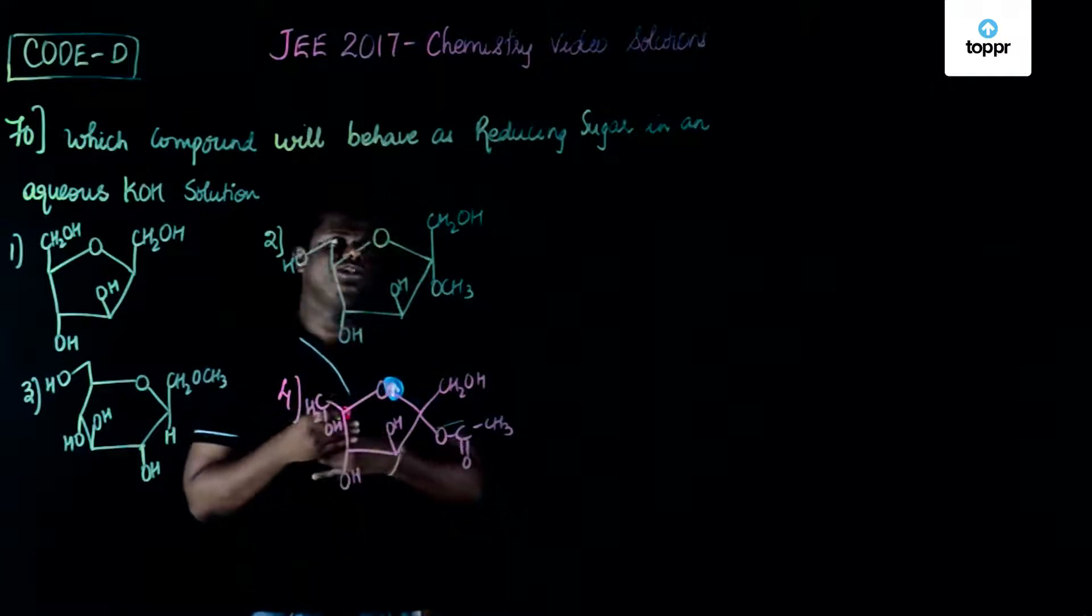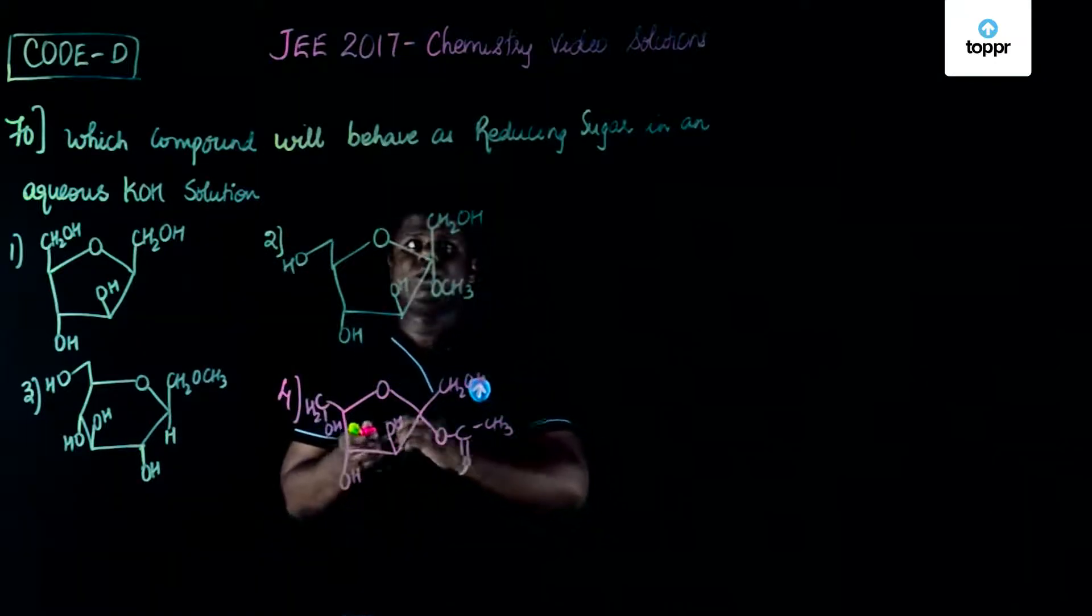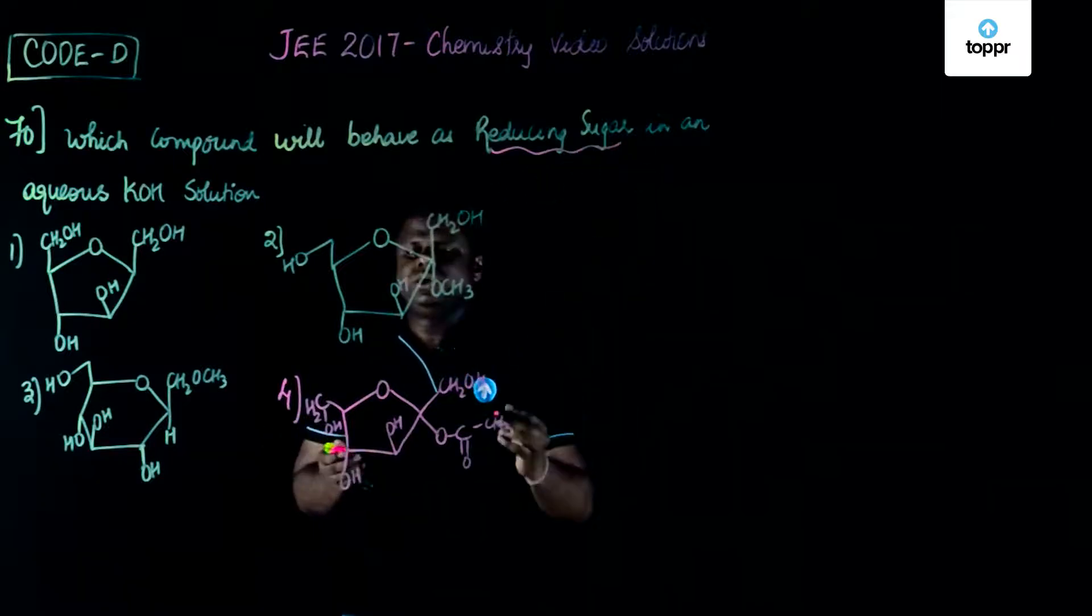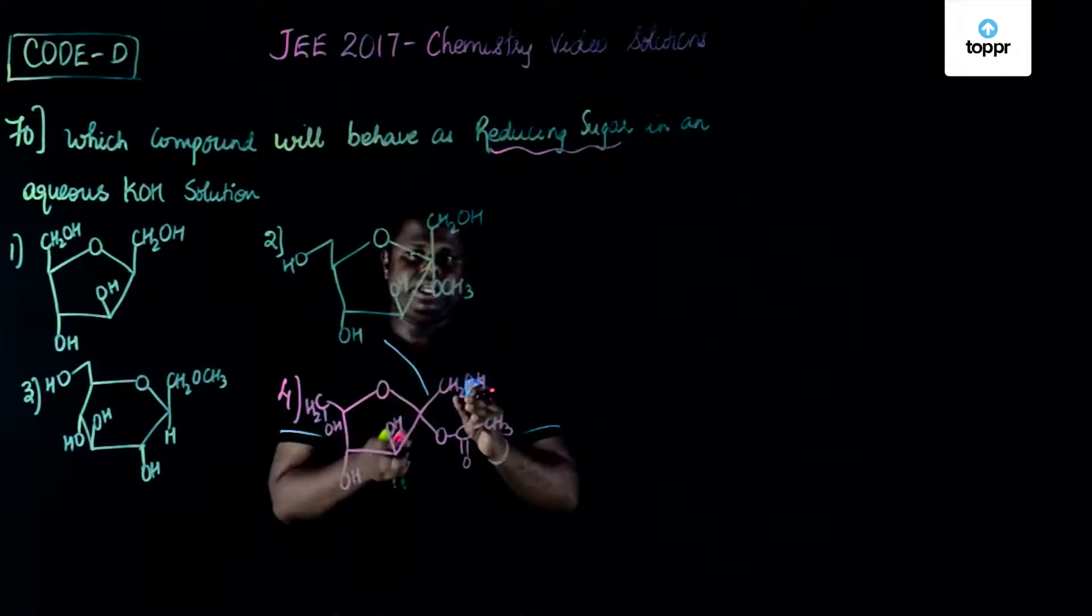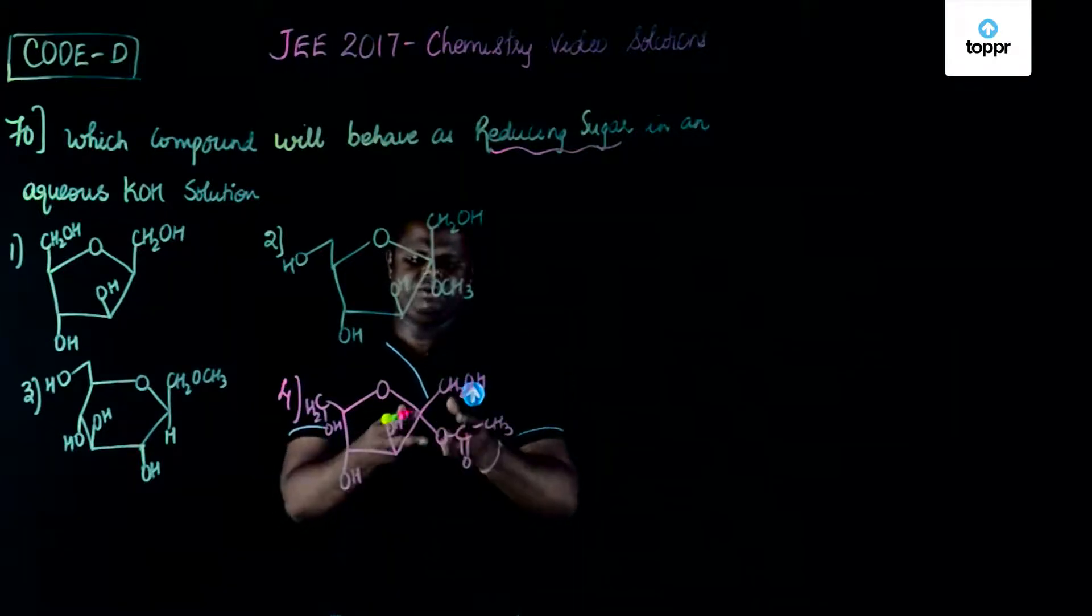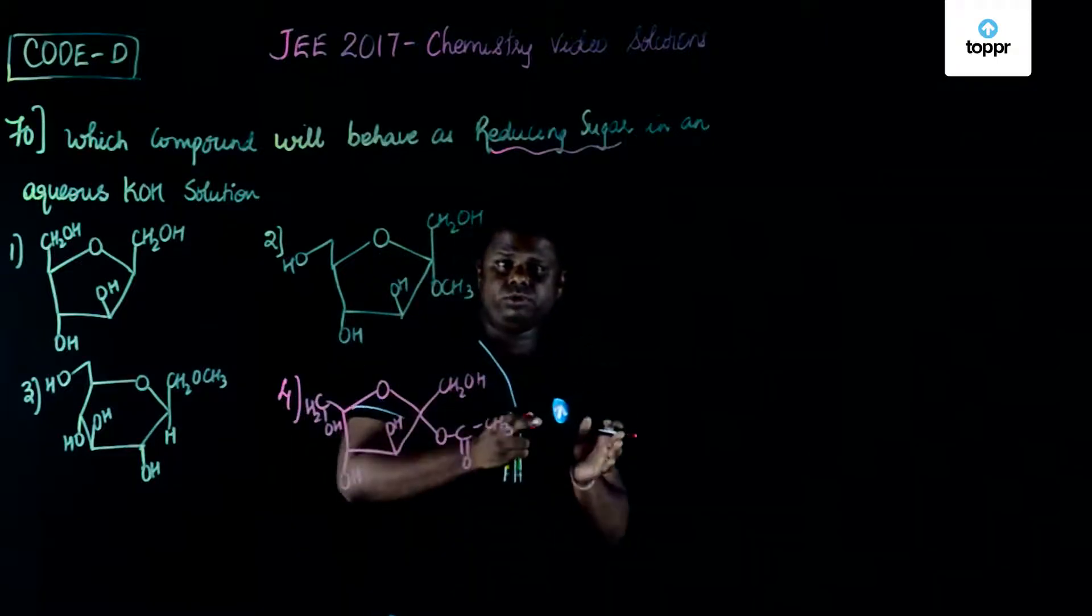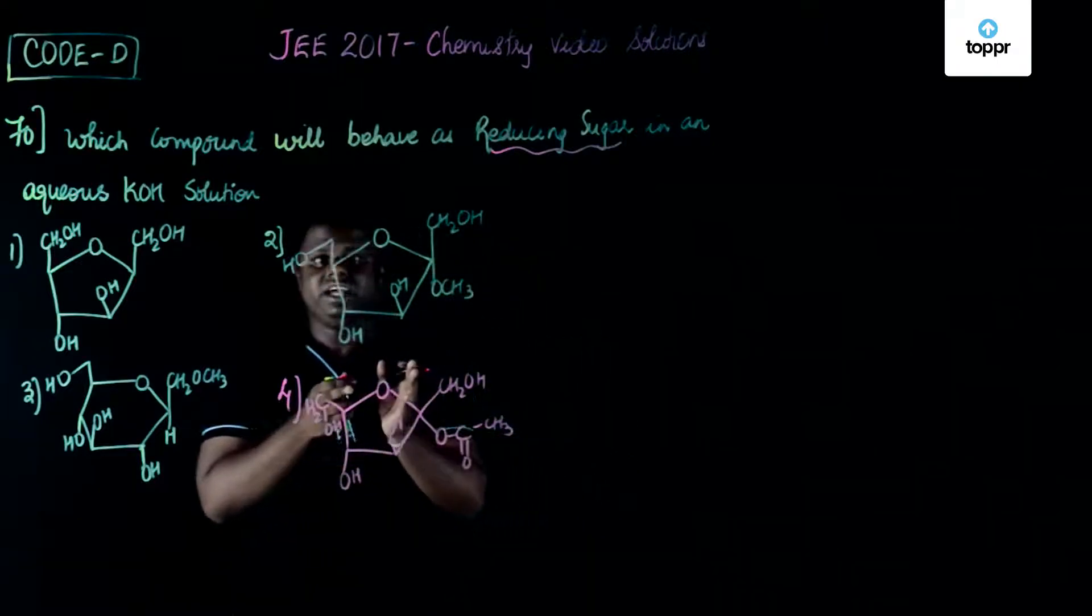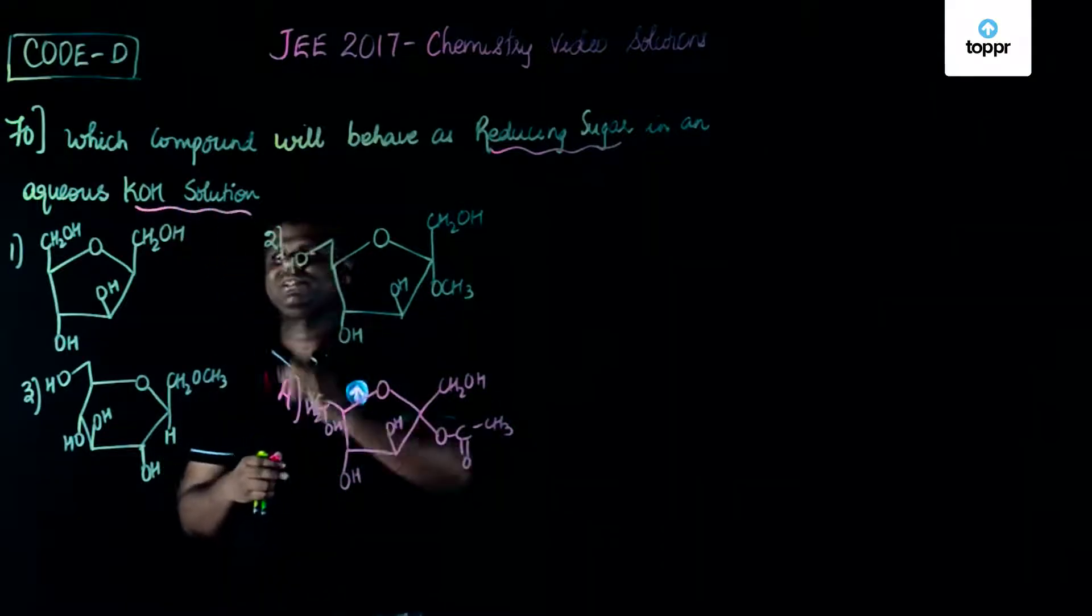You already know that reducing sugars are the ones which have a hemiacetal linkage. There is one more clue in this particular question. Hemiacetal means it should contain something like CH2OH and one OH that could be generated. Normally this OH could be generated when you have an ester that hydrolyzes to give you an alcohol. This could be one important clue in this solution.